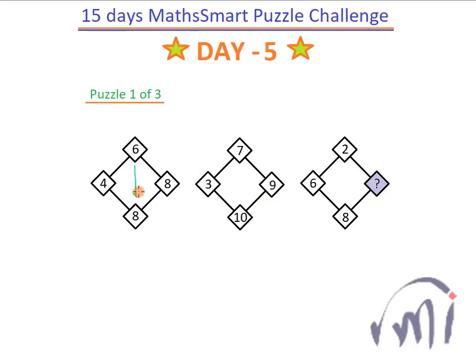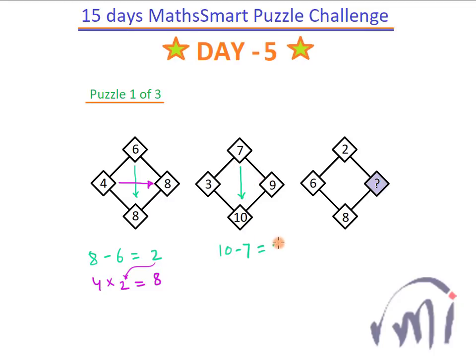If I see the relation between these two, 8 minus 6 gives me 2, and if I see the relation between these two boxes, 4 multiplied by this 2 gives me 8. Similarly, the difference 10 minus 7 is equal to 3, and when this 3 gets multiplied by this 3, it gives me 9.